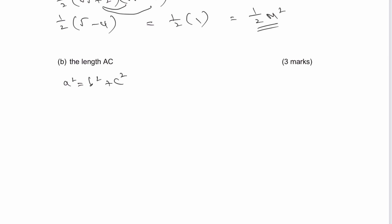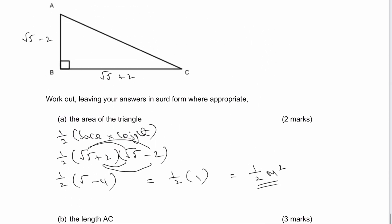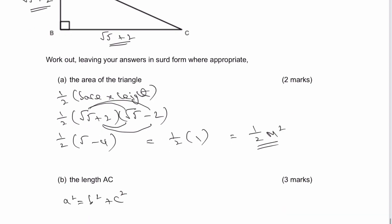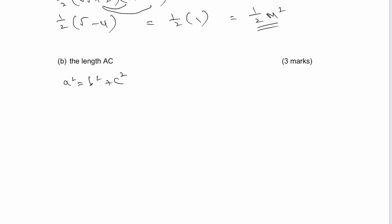So b squared. Well, I'm going to say if I go back to the diagram that b is this length and then c is going to be this length. So if I put that directly into the formula, I've got root 5 minus 2 and that's squared, so it's going to be multiplied by root 5 minus 2 again.